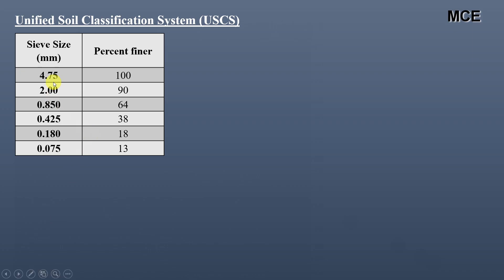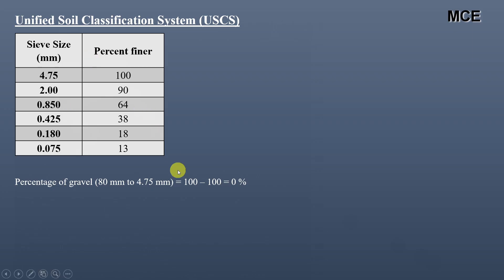I have written the sieve size for the corresponding sieve number and the percent finer is shown in the next column. For sieve size 4.75 mm, percent finer is 100; for 2 mm, percent finer is 90, and so on for the rest of the sieves. The percentage of gravel, which is sized from 80 mm to 4.75 mm, is 100 minus 100, which is 0 percent. All soil material passes through the 4.75 mm sieve, so there is 0 percent gravel.